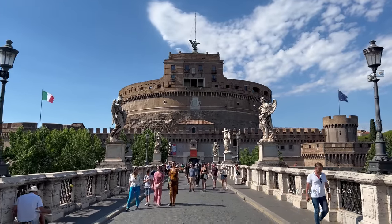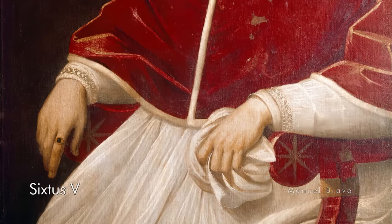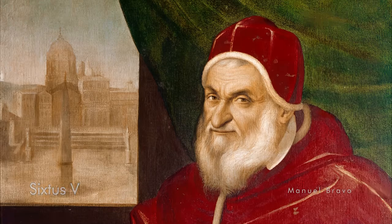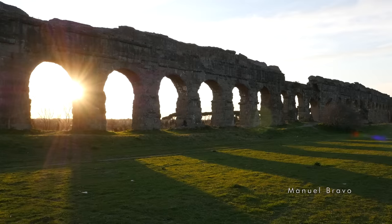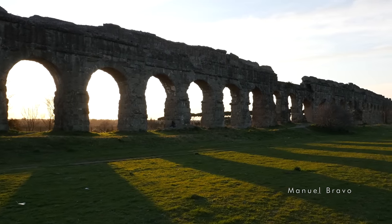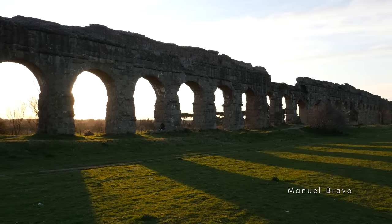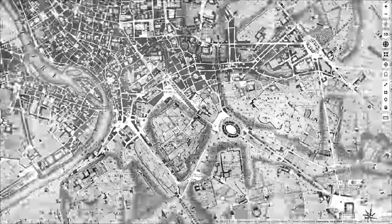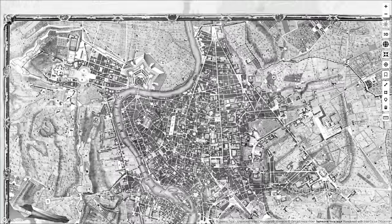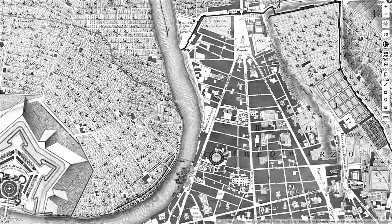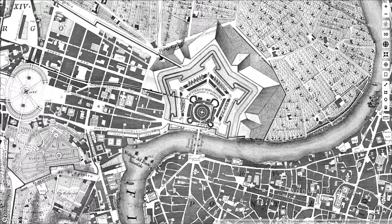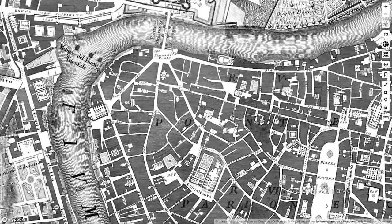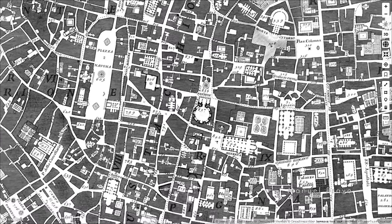In 1585, Sixtus V gets elected as Pope. He picks up this other aspect of what it is to be a Roman and becomes very interested in infrastructure — building roads, building bridges, building aqueducts. The final form of Renaissance Rome owes most to the pontificate of Sixtus V. He was in the papacy for only five years, a relatively short period of time. But during that time, he undertook all of these projects to modernize Rome.